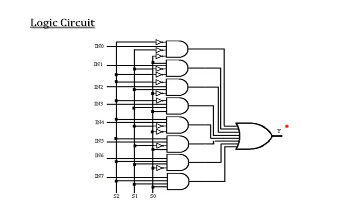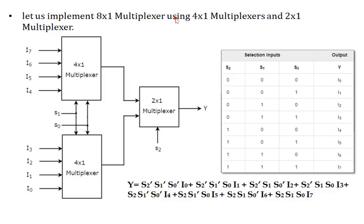Next I am going to implement the 8-to-1 multiplexer using lower-order multiplexers. This uses two 4-to-1 multiplexers and one 2-to-1 multiplexer. With 4 inputs each into the two 4-to-1 MUXes, we get 8 total inputs; their 2 outputs feed into the 2-to-1 MUX. This is the block diagram. If you want to analyze this, I will explain.